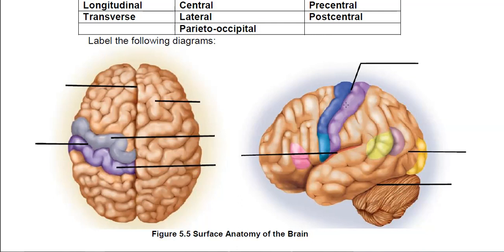From the side view, we again see the central sulcus with the precentral and postcentral gyri. Here we can also see a different sulcus not visible from the top: the lateral sulcus. In the back is the parieto-occipital sulcus.